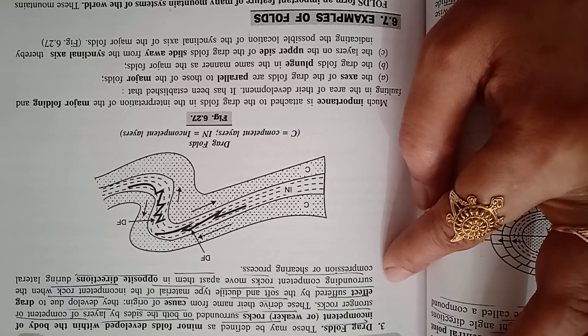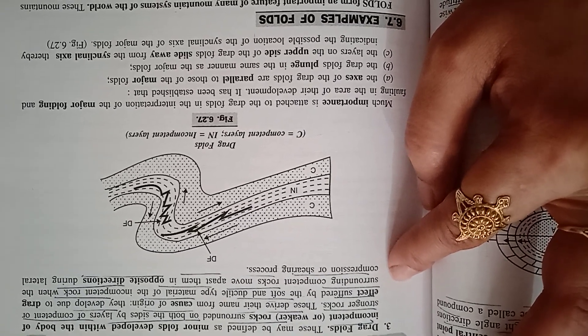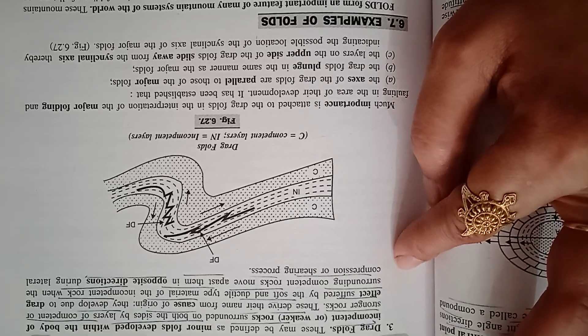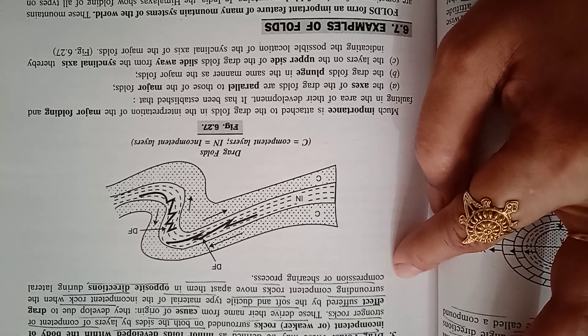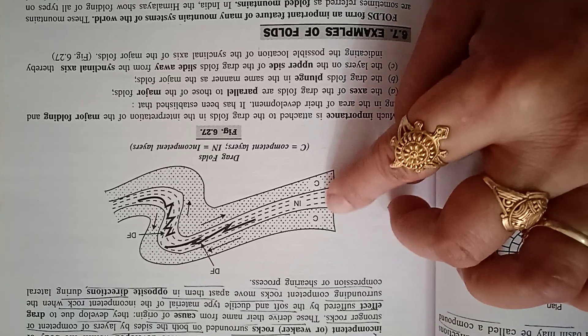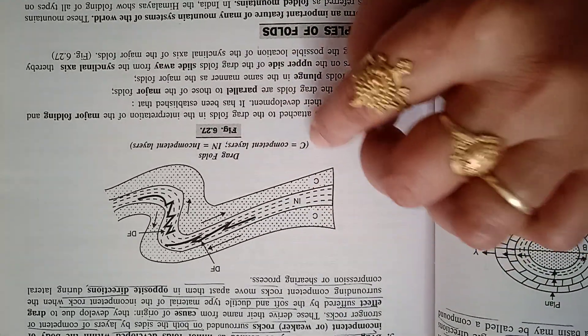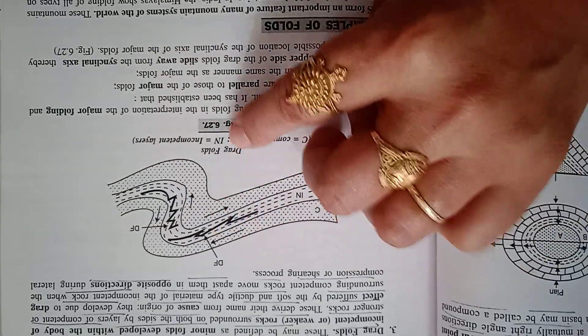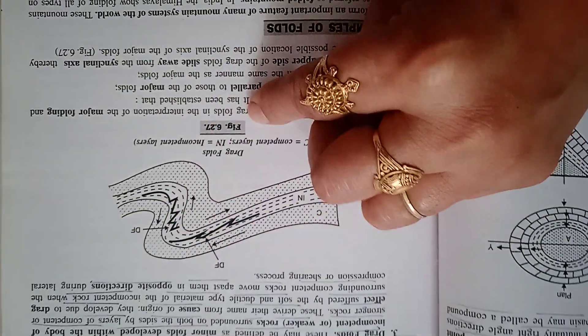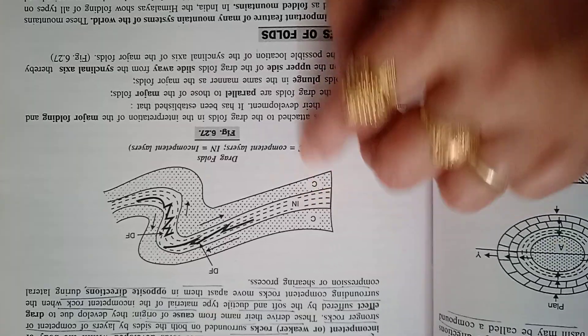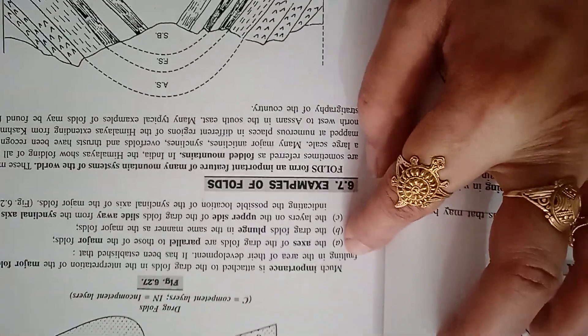This occurs when the surrounding competent rocks move past them in opposite directions during lateral compression and shearing. In the figure, C indicates the competent layer, DF indicates the drag fold, and IN means incompetent layer. Much importance is attached to drag folds in the interpretation of major folding and faulting.